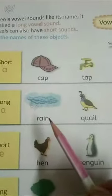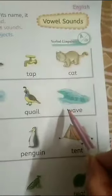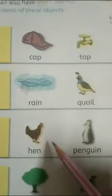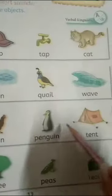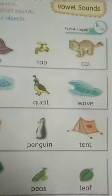Next: vowel sounds. Shorty: Cap, Tap, Cat. Longy: Rain, Wave. Shorty: Hen, Penguin, Tent. Longy: Tree, Leaf.